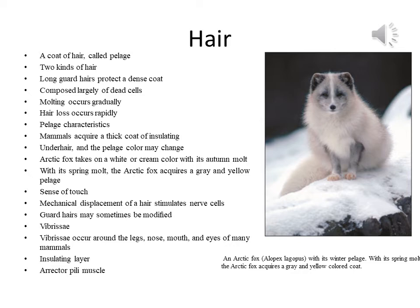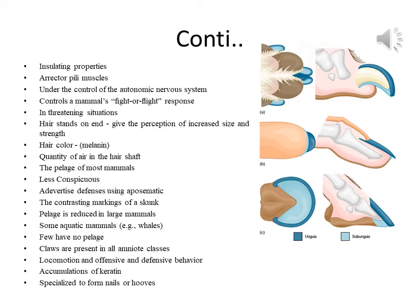A band of smooth muscle called the erector pili muscle runs between the hair follicle and the lower epidermis. When the muscle contracts, the hair stands upright, increasing the amount of air trapped in the pelage and improving its insulating properties. The erector pili muscles are under the control of the autonomic nervous system, which also controls the mammal's fight or flight response.